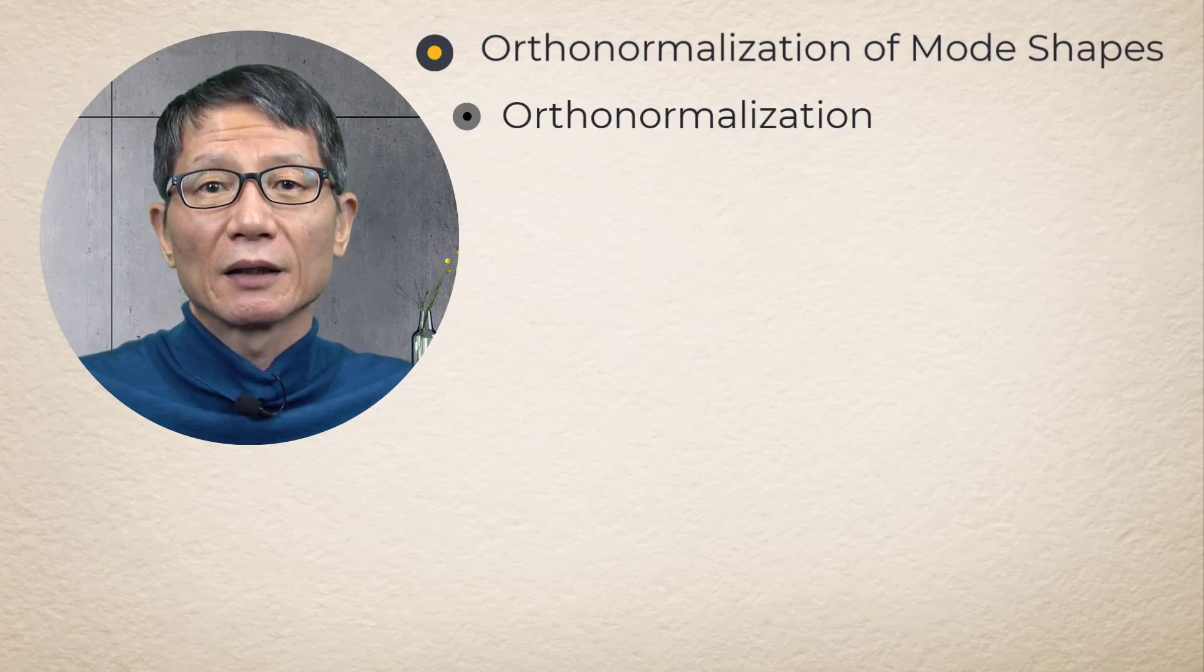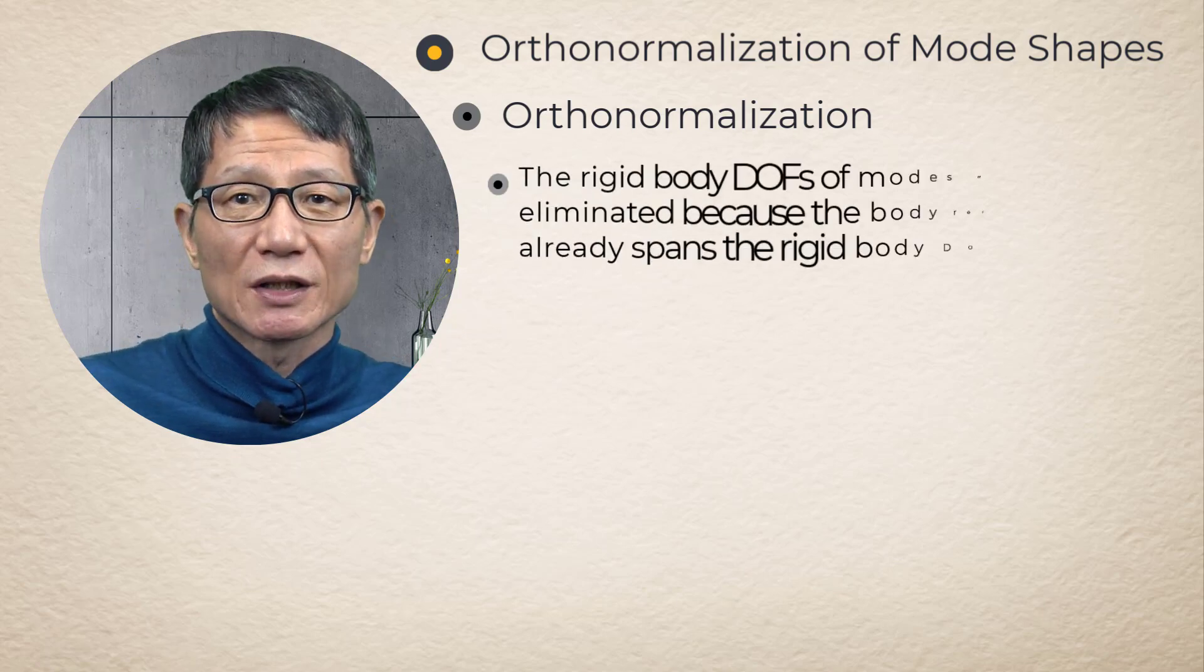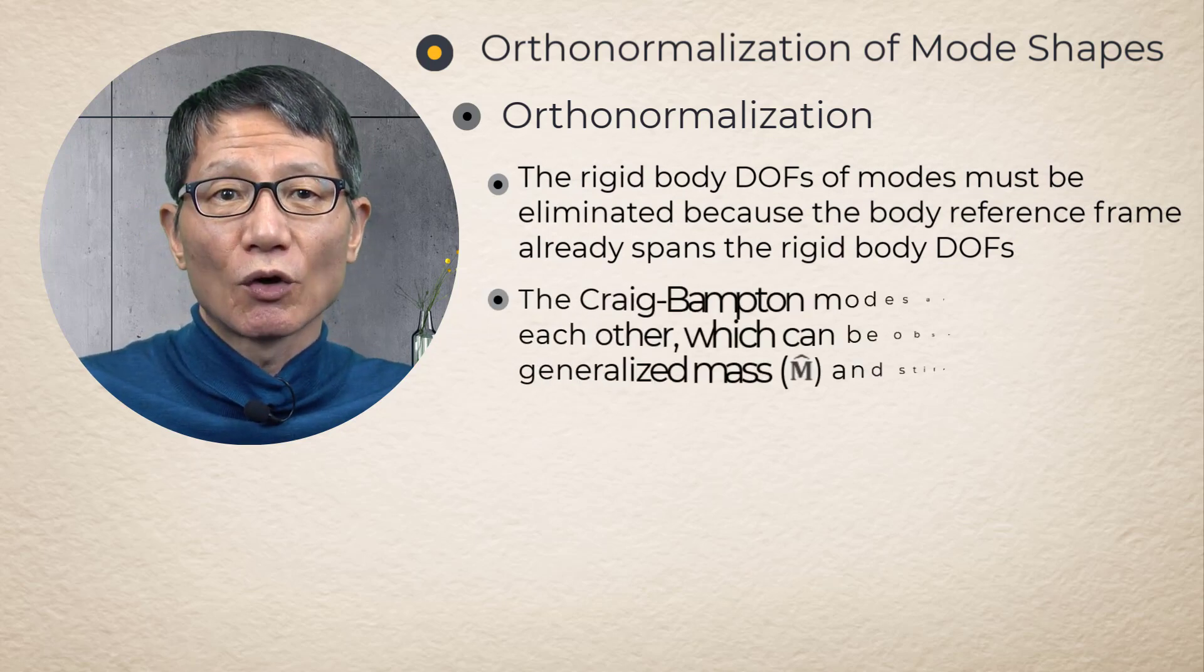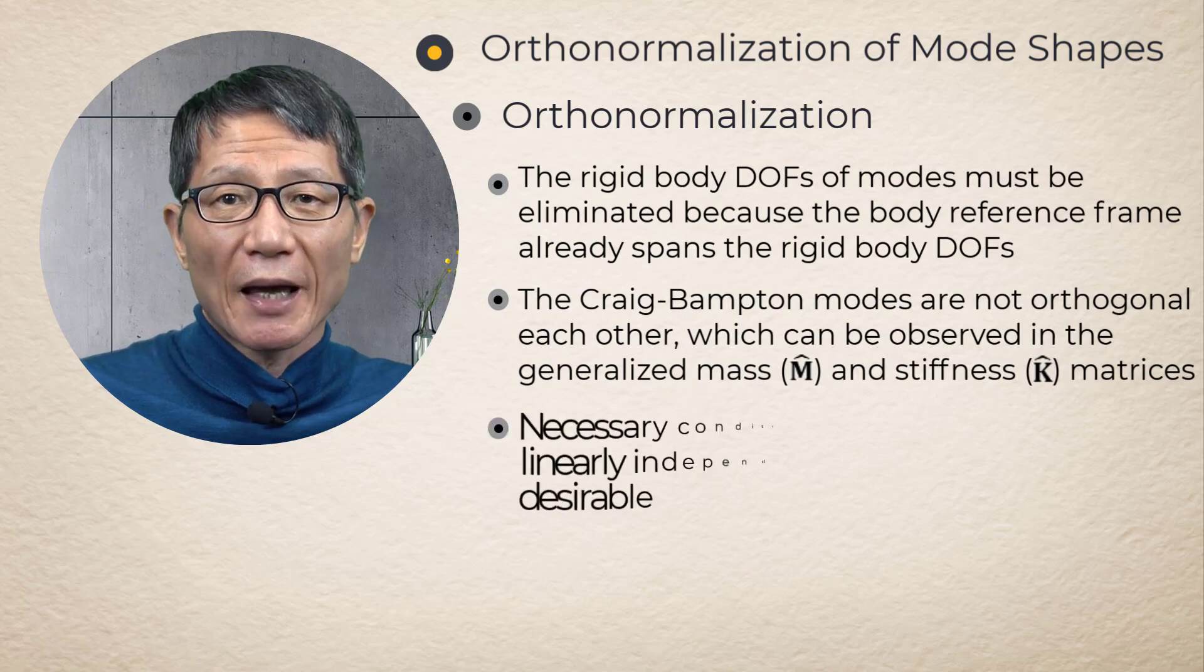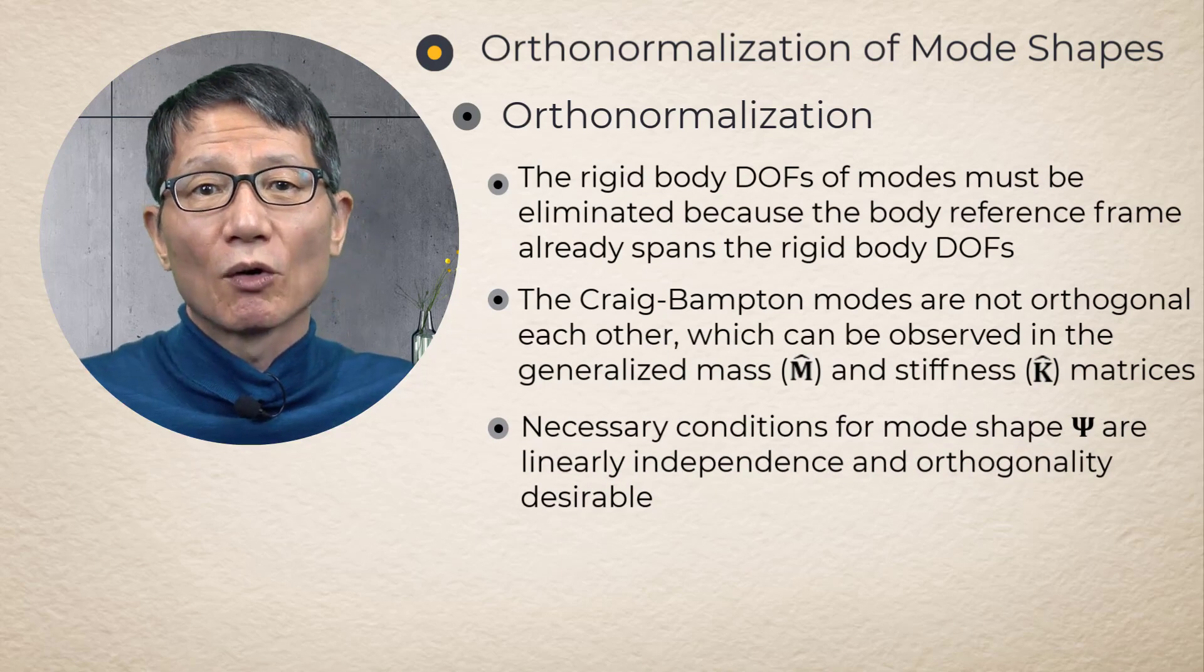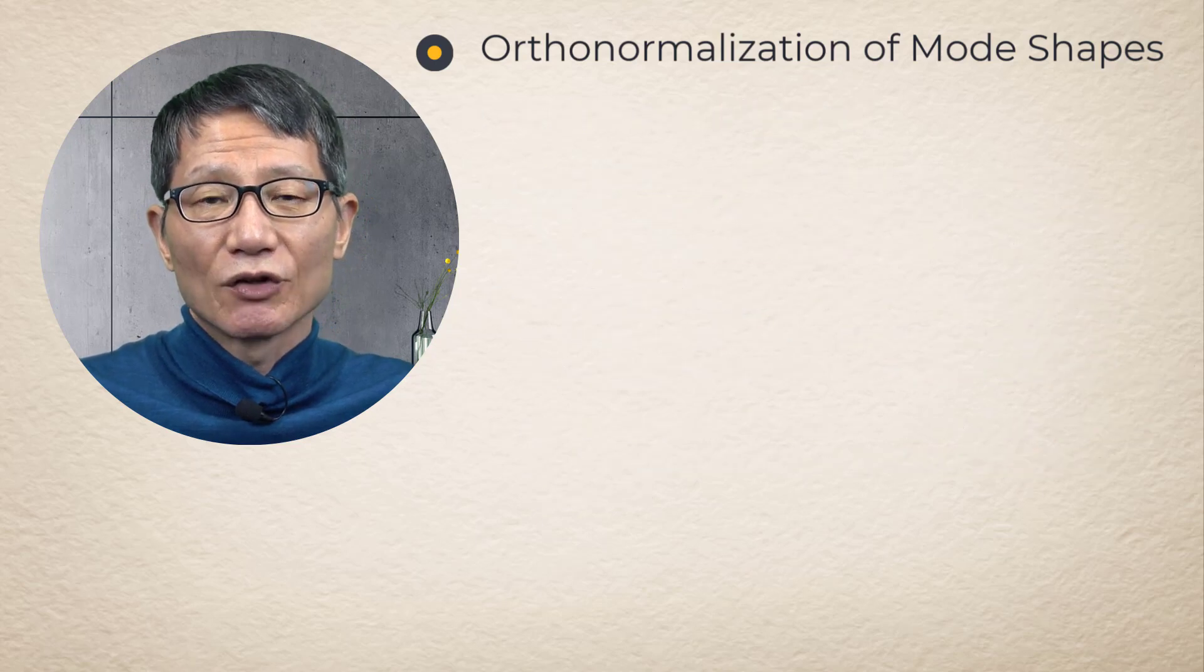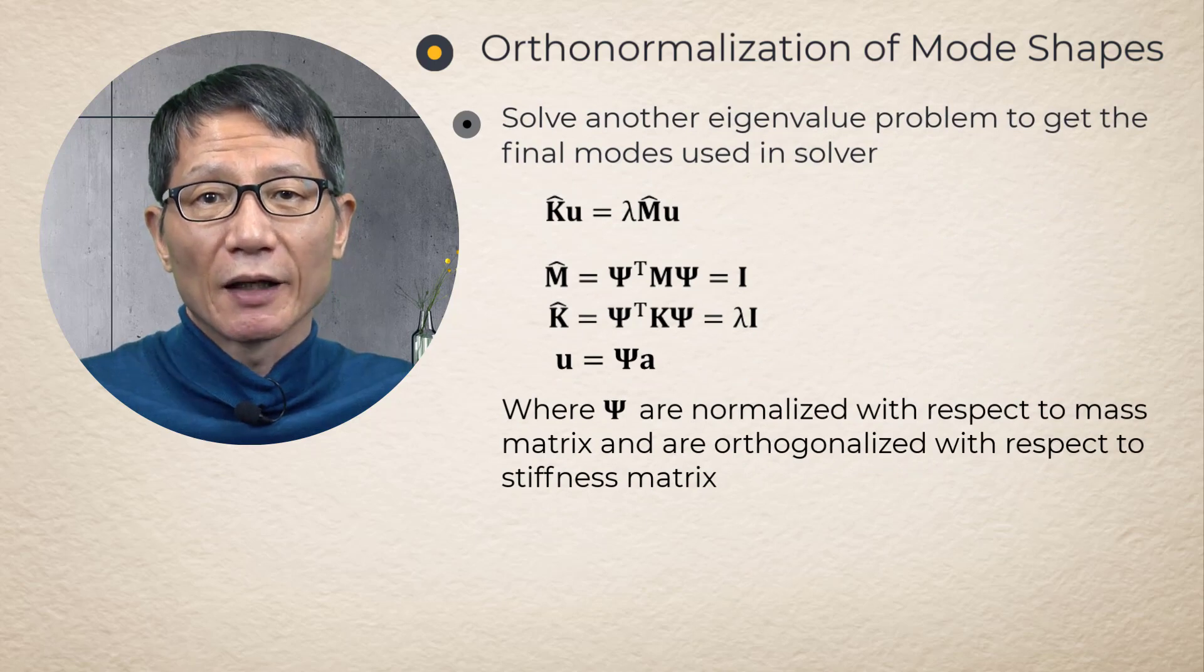If we obtain the eigenvectors of the generalized stiffness and mass matrices, they are naturally orthogonal. Therefore, the final mode shapes used in the solver are obtained by calculating the eigenvectors of the generalized mass and stiffness matrices. Since the rigid body mode of a modal body is covered by the body reference frame of the modal body, the rigid body mode must be removed from the eigenvectors if there are any.